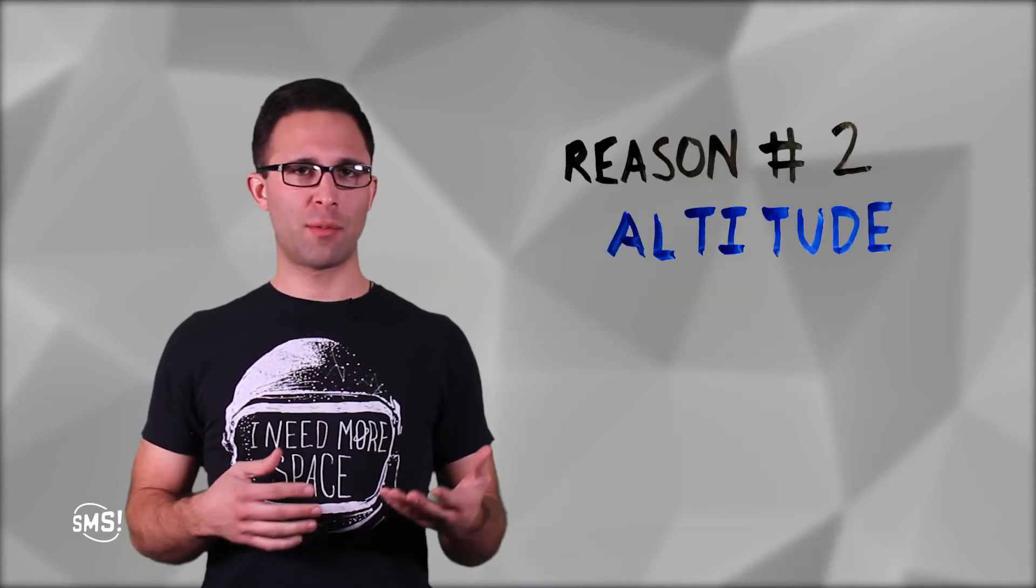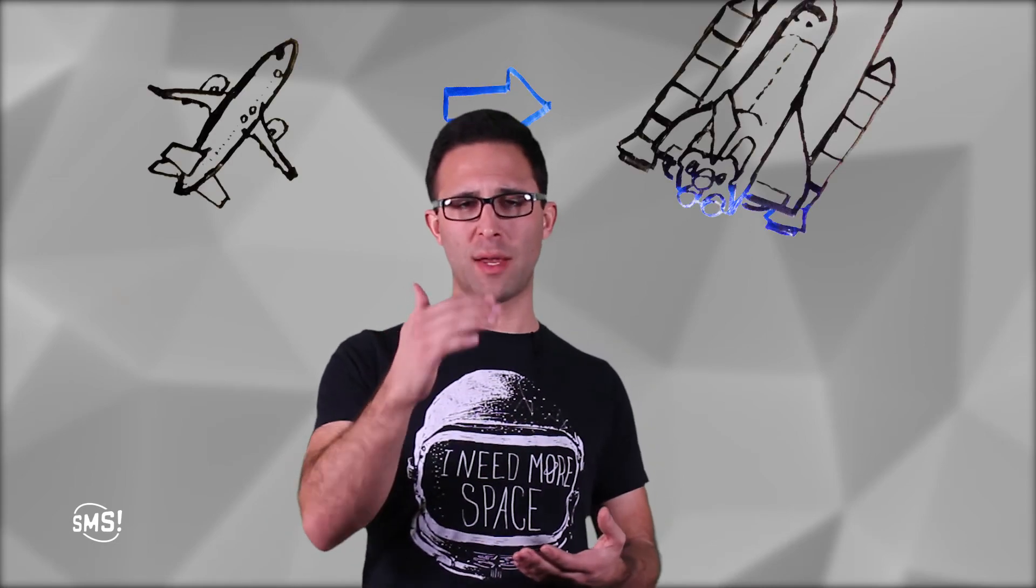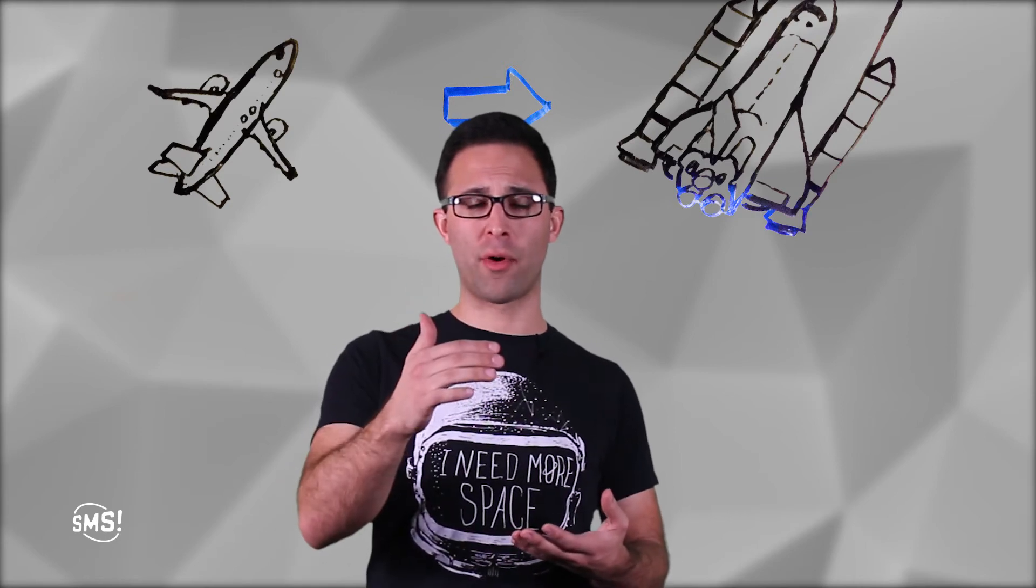But there's also this other interesting concept that is the von Karman line. A while back, von Karman did this really neat derivation, a calculation that showed that above a certain altitude, about 100 kilometers, a nice round number, or 62 miles, you reach this area where you kind of transition from being an airplane into being a spacecraft or being in orbit around the earth.